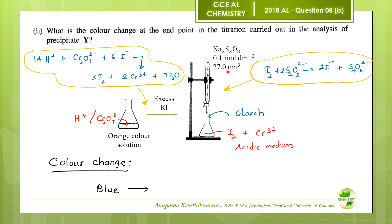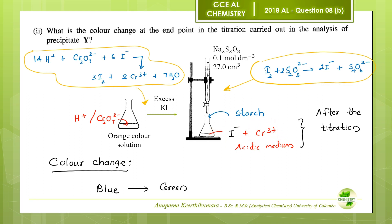During the titration, thiosulfate ions react with iodine to produce iodide ions and tetrathionate ions. After the titration, the mixture contains iodide ions, Cr³⁺ ions, and tetrathionate ions. Tetrathionate ions and iodide ions are colorless, so the final color is due to Cr³⁺ ions. Chromium 3+ ions give a green color in acidic medium. Therefore, the color change at the end point is blue to green.